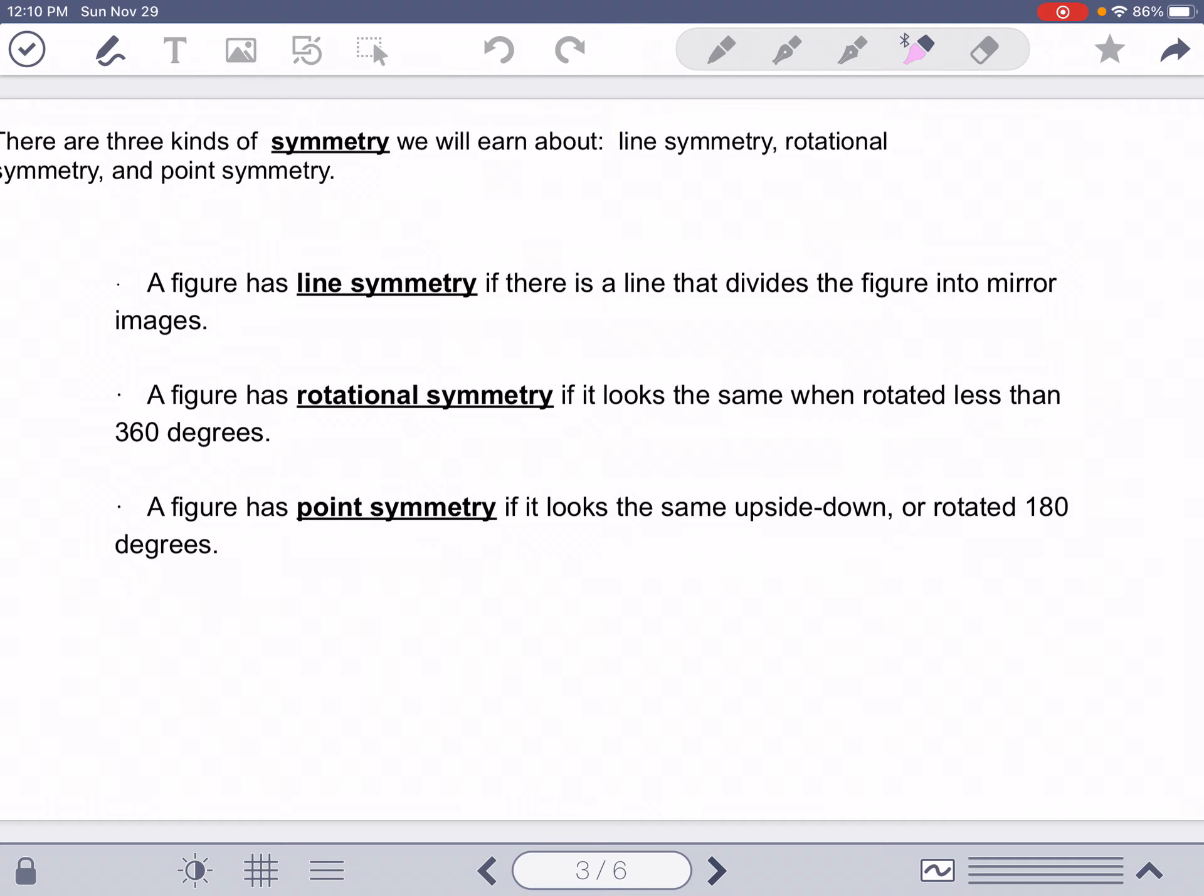There's three kinds of symmetry that we're going to learn about. There's line symmetry, rotational symmetry, and point symmetry. A figure has line symmetry if there is a line that divides the figure into mirror images. So it's kind of like it folds on itself. The most classical example is the butterfly wings.